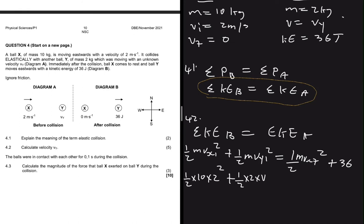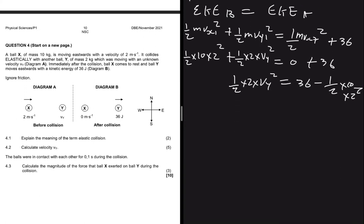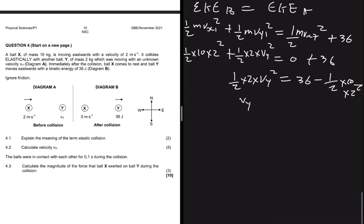Substituting values: one-half times 10 times 2 squared plus one-half times 2 times VY squared equals zero plus 36. Rearranging, one-half times 2 times VY squared equals 36 minus one-half times 10 times 2 squared. Dividing both sides by one-half times 2, we get VY squared equals 36 minus one-half times 10 times 2 squared, all divided by one-half times 2.